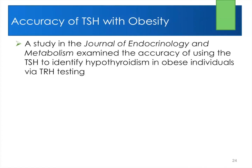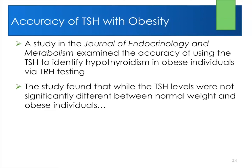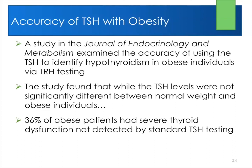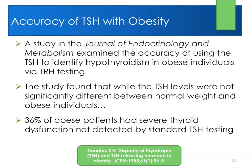A study in the Journal of Clinical Endocrinology and Metabolism looked at the accuracy of TSH in determining low thyroid in obese patients. They found that while TSH levels were not significantly different, 36% of obese patients had severe dysfunction of the thyroid — not just mildly low, but severe. Again, TSH failed to detect it.